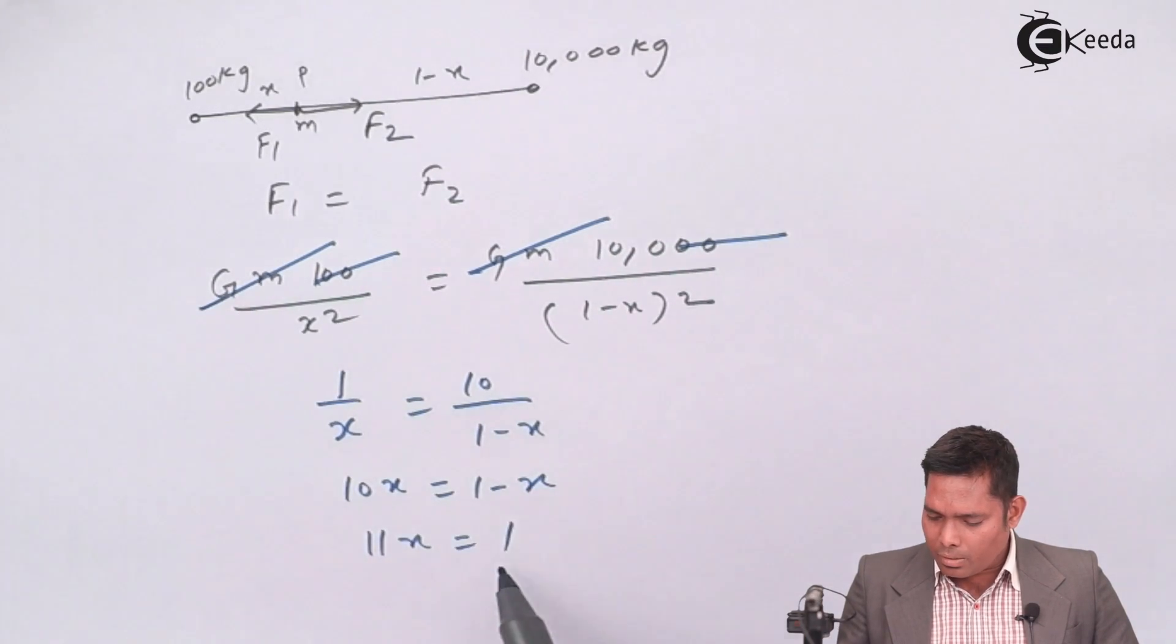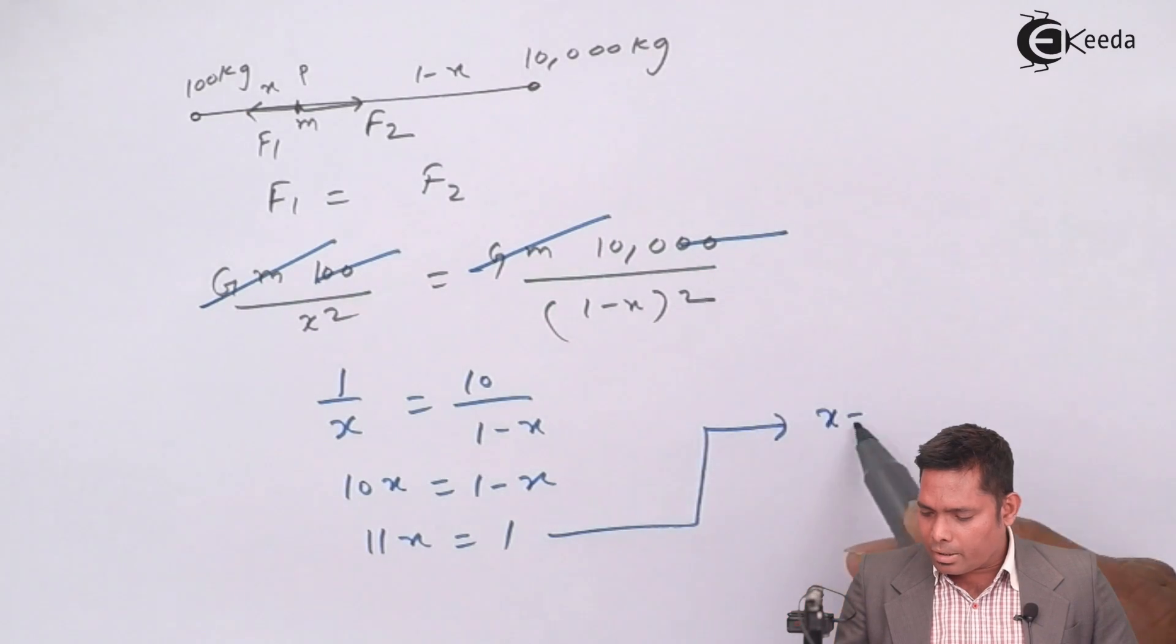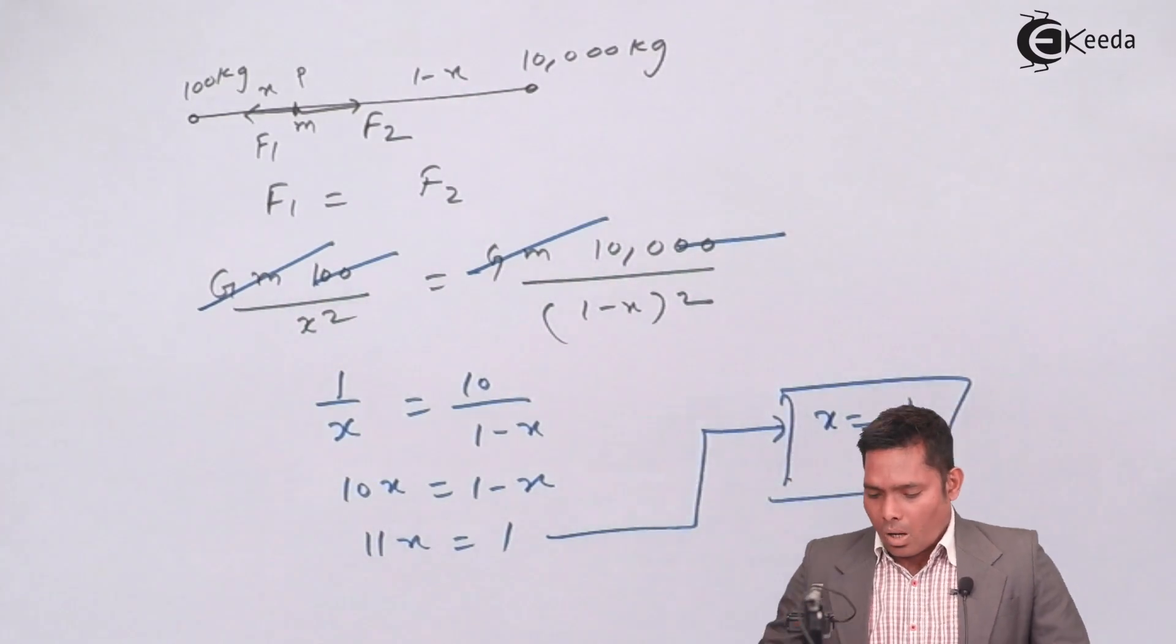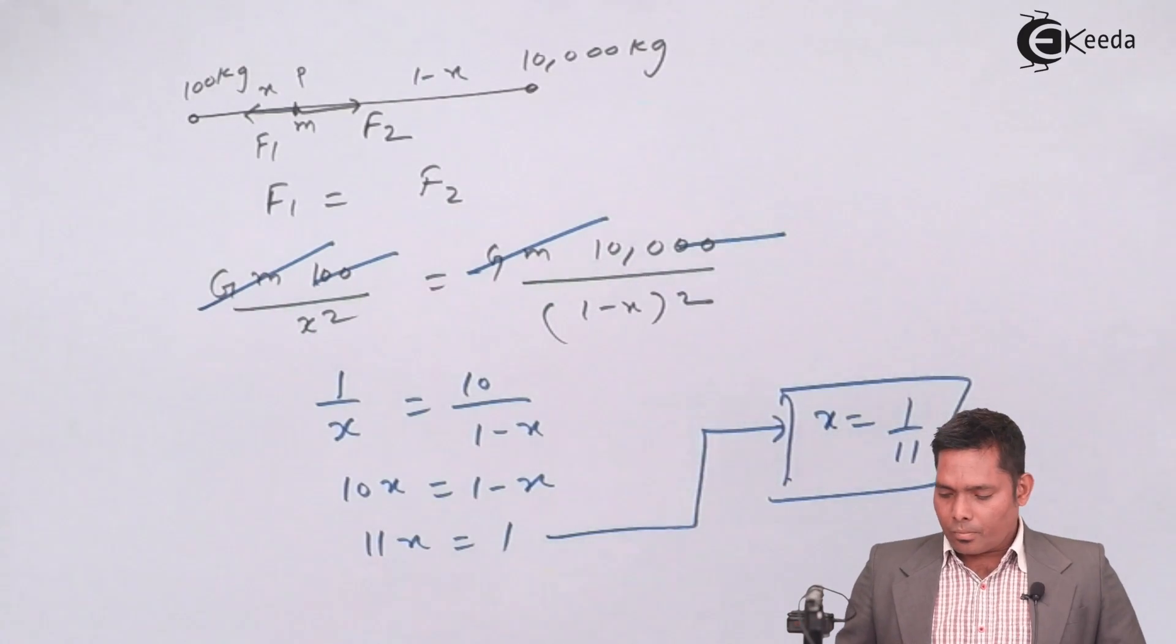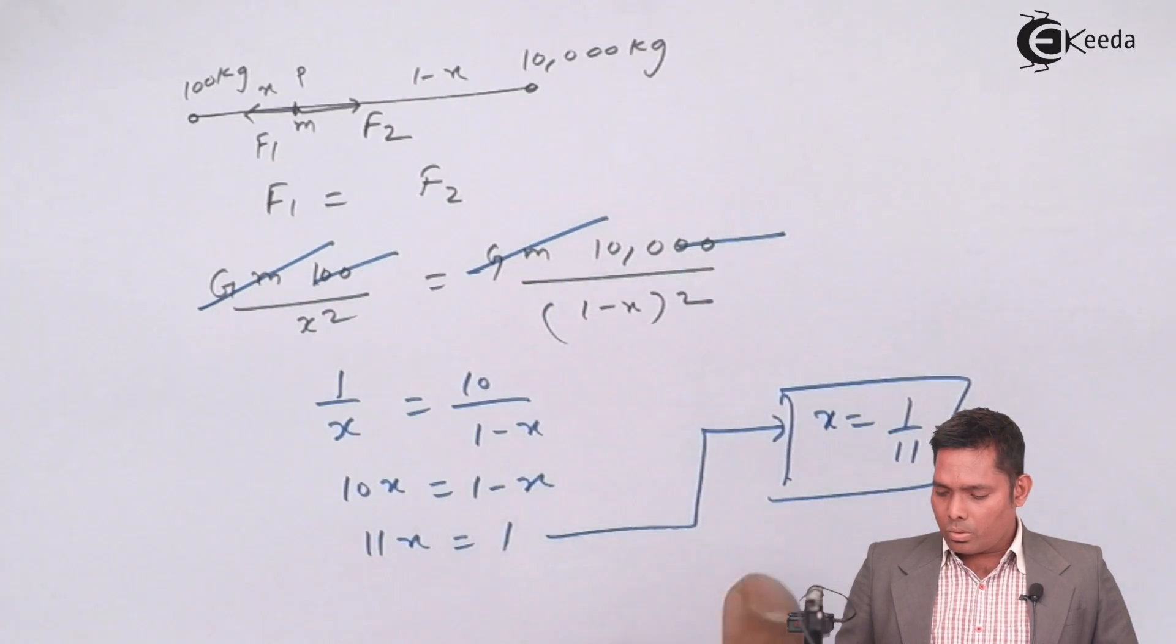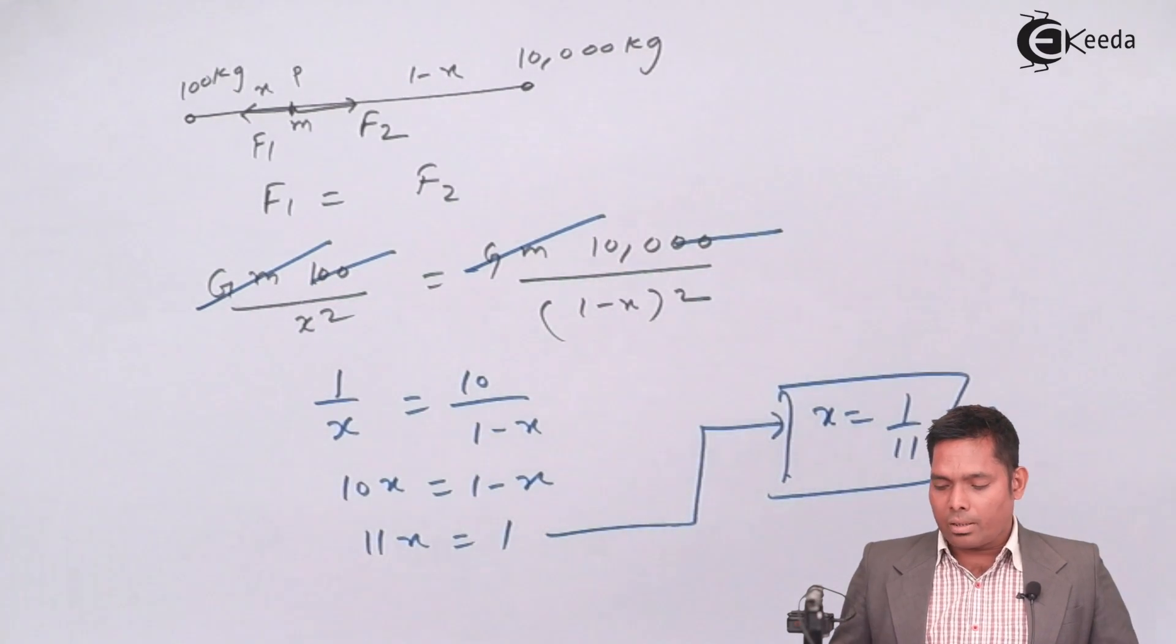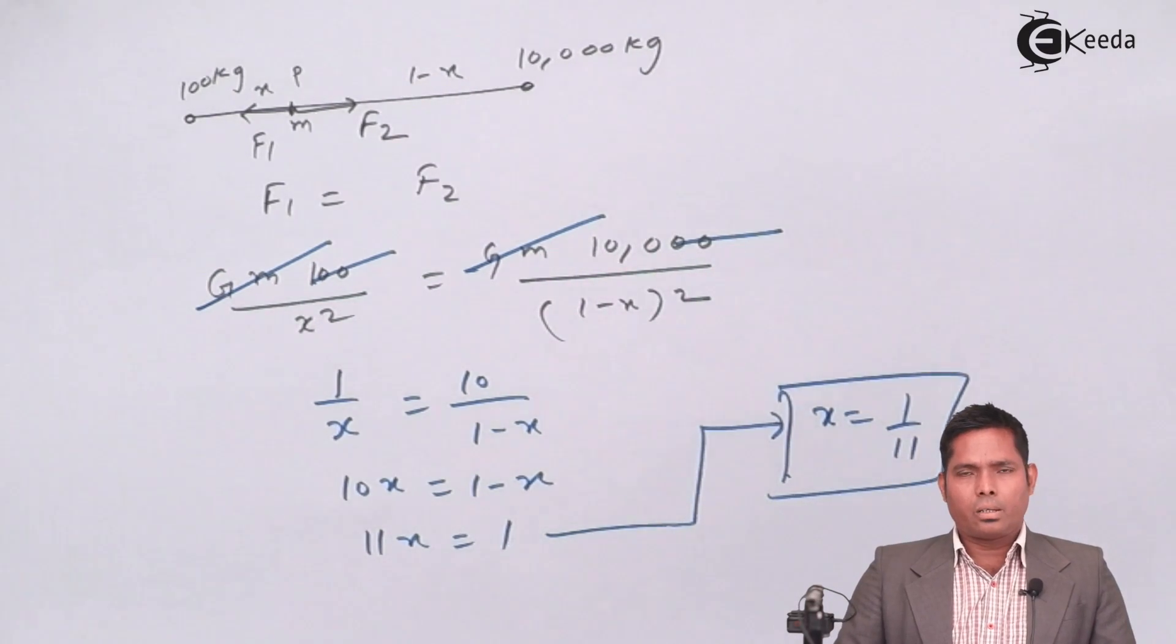So 11x equals 1. From here I'm getting that x is 1 over 11. This is how you get the value of x. This is in meters, so 1 over 11 meter. That is the answer to this question. Thank you.